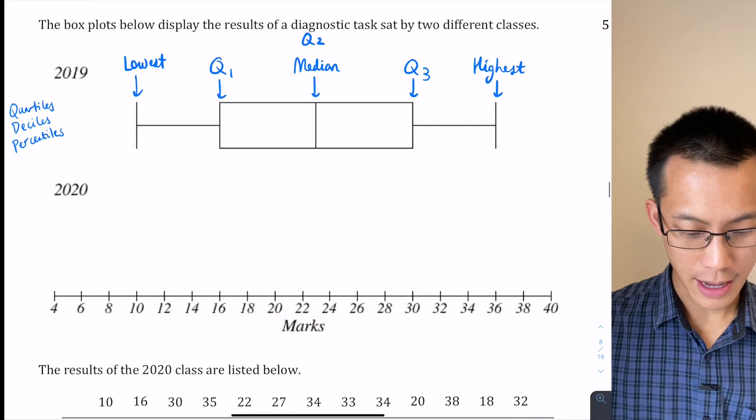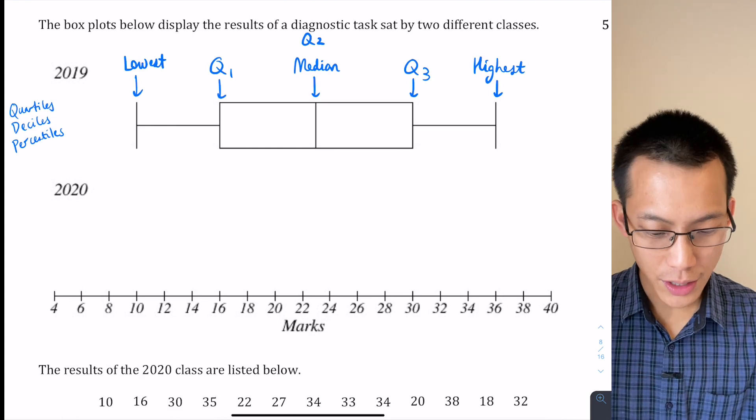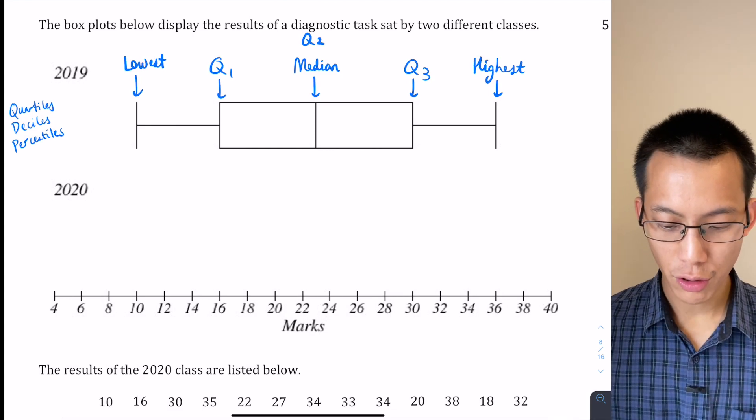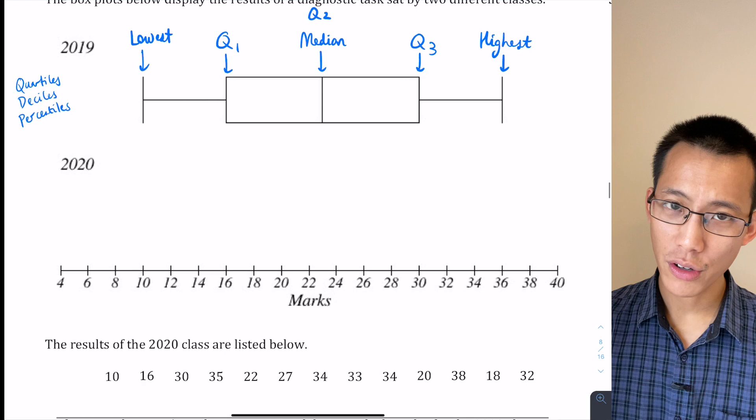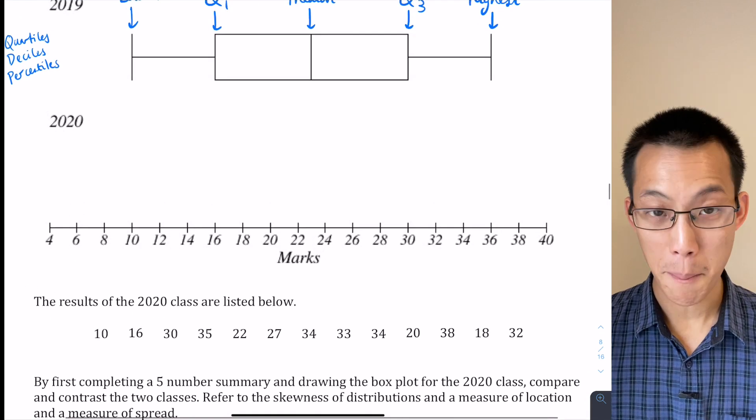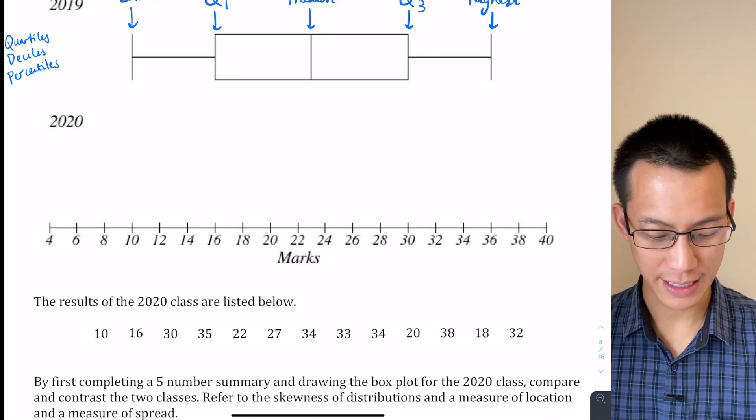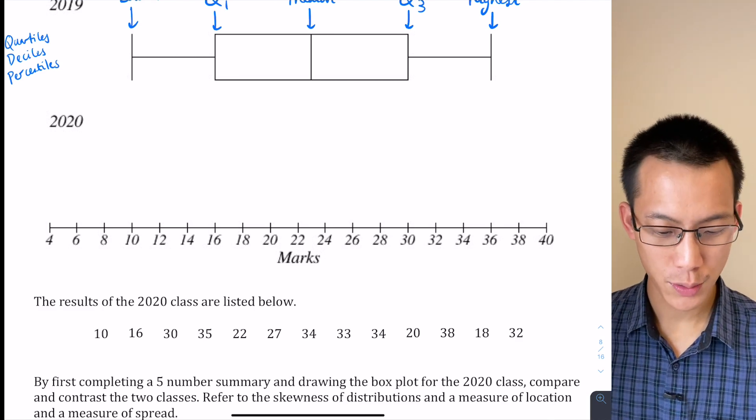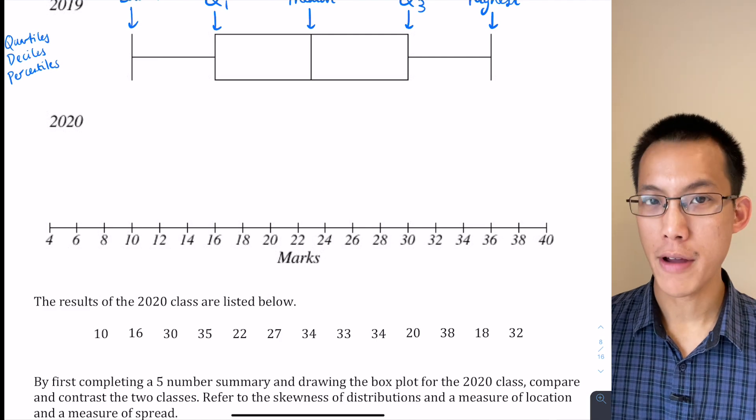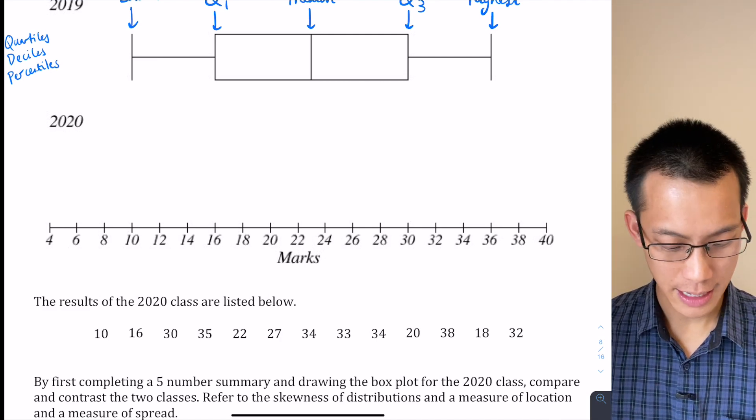We need to look at this data set here, which is kind of a mishmash of different numbers in random order, or maybe alphabetical order, which is not very useful to us. We need to put it in numerical order, and I'm going to say ascending is probably the easiest.